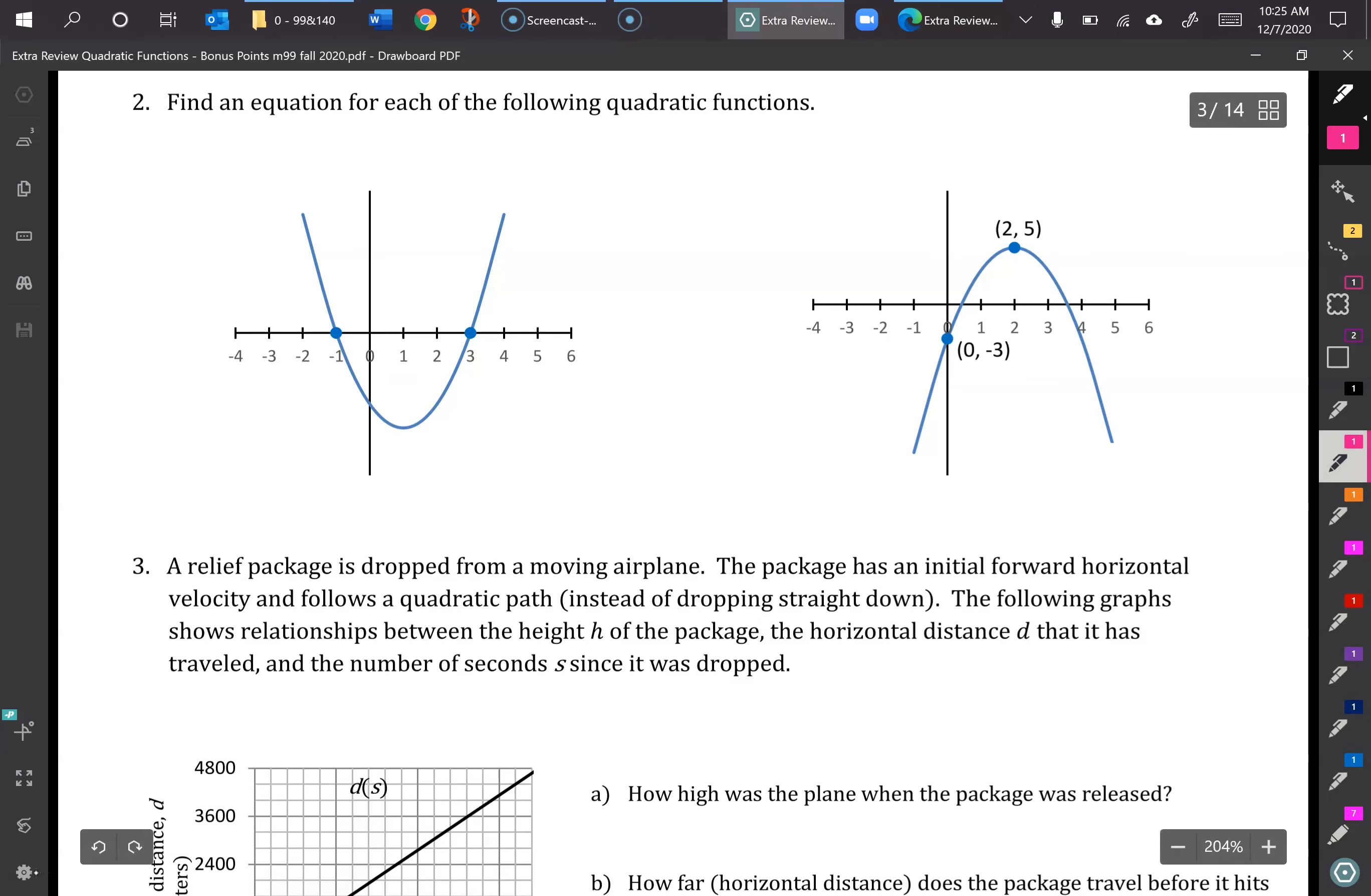You can see the graph here has x-intercepts of negative 1 and 3. So that means our function would have x plus 1 in parentheses times x minus 3. If we were to set it equal to 0 and solve, in order to get this to be 0, we would have to have x plus 1 equals 0, or x minus 3 equals 0.